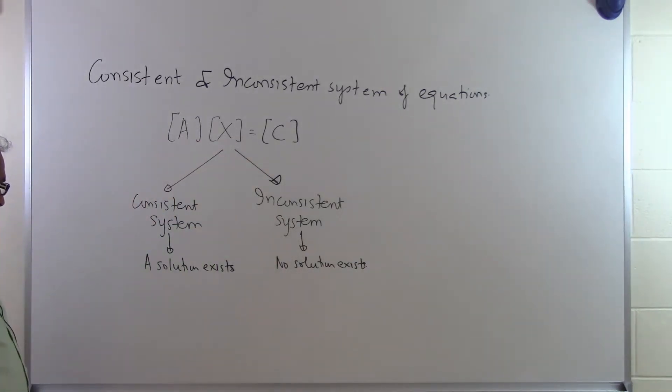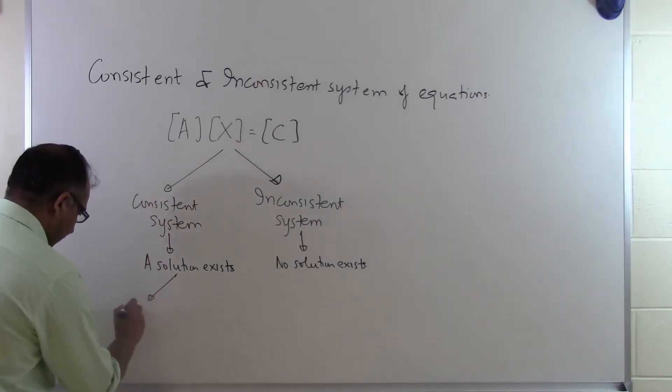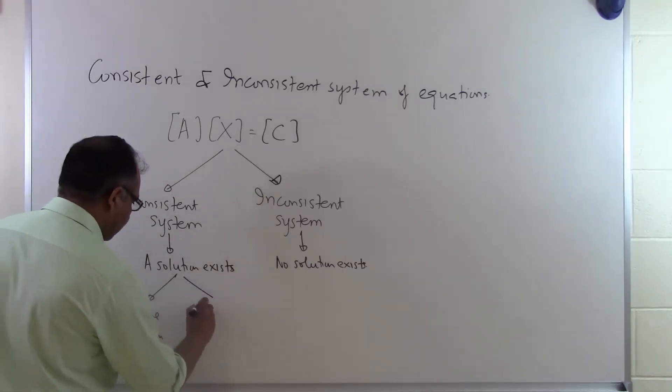So if that's the case, then what do we mean by a solution exists? There are two possibilities when a solution is existing. Either you have a unique solution or you have infinite solutions.